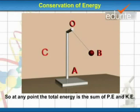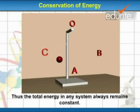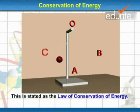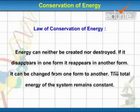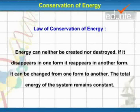So at any point, the total energy is the sum of potential energy and kinetic energy. Thus, the total energy in any system always remains constant. This is stated as the law of conservation of energy. Law of conservation of energy: Energy can neither be created nor destroyed. If it disappears in one form, it reappears in another form.